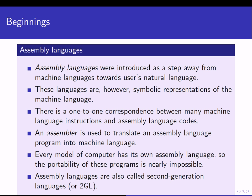Assembly language needed to be translated into machine language, and that was done through an assembler. Also, every model of a computer has its own assembly language, so portability of these programs is nearly impossible. When you write a program in assembly language for a given computer, that program is unique — you can't compile it on a different computer. So we had first generation machine languages and second generation assembly languages.